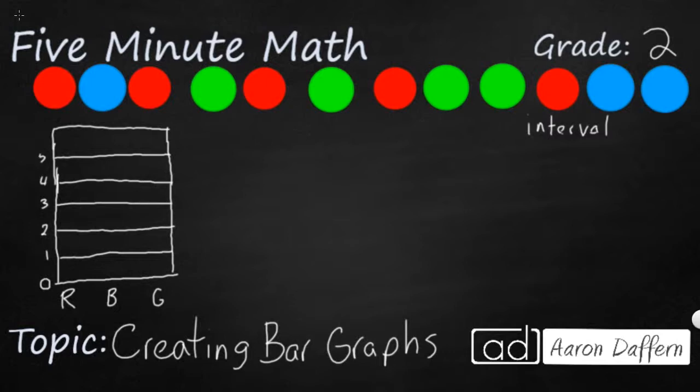So now I just need to create my bars. How many reds do I've got? 1, 2, 3, 4, 5. So I'm going to make kind of a skinny bar like this. And I'm going to make it go all the way up to 5. Now I'm going to shade it all in. So now it looks like you see on the screen here. I've got 5 reds because my bar goes all the way up to 5.